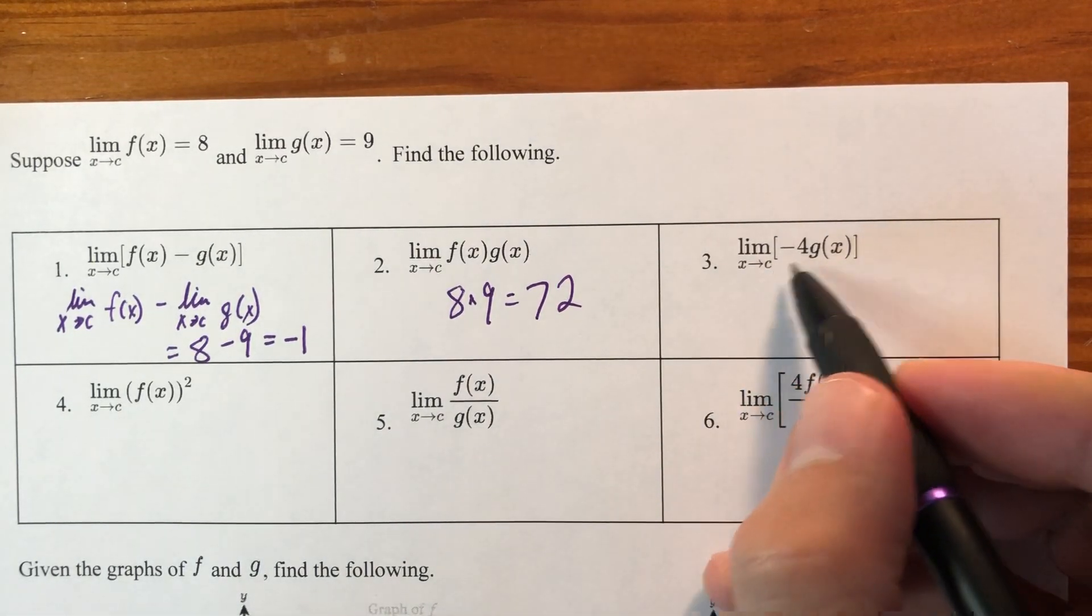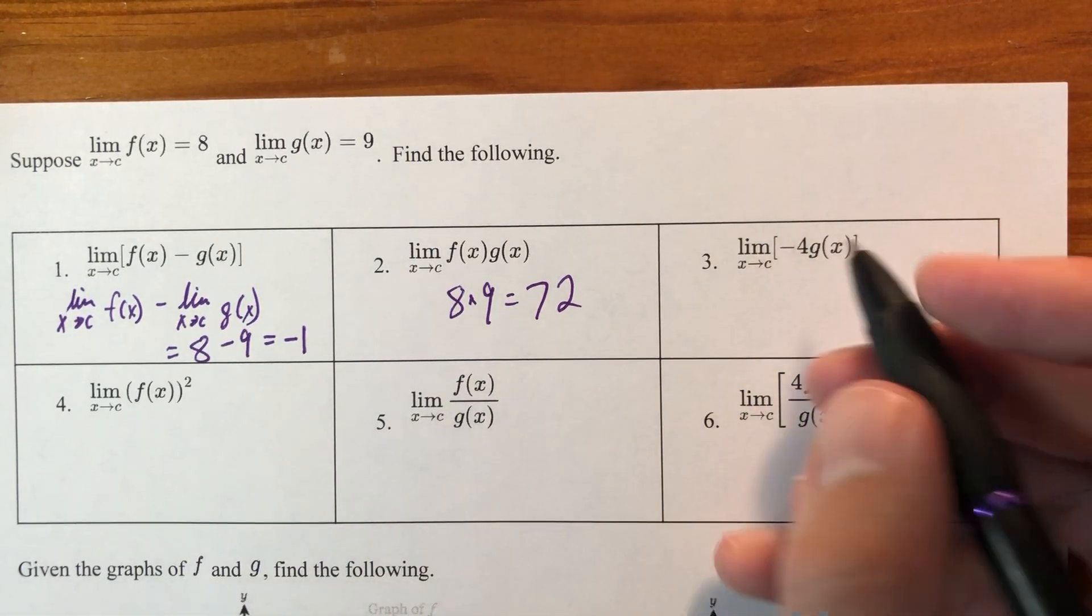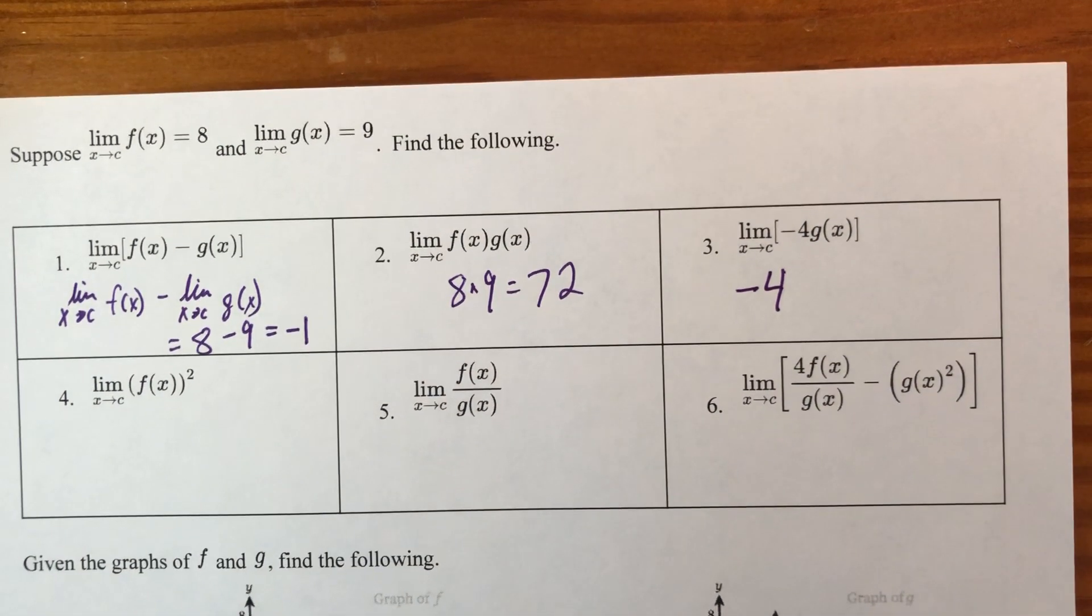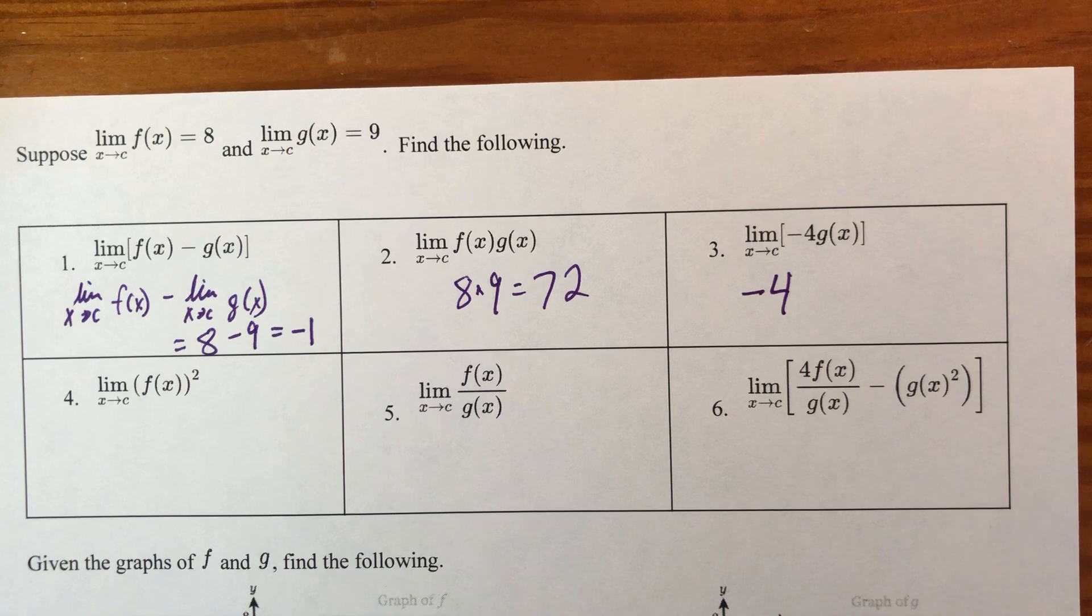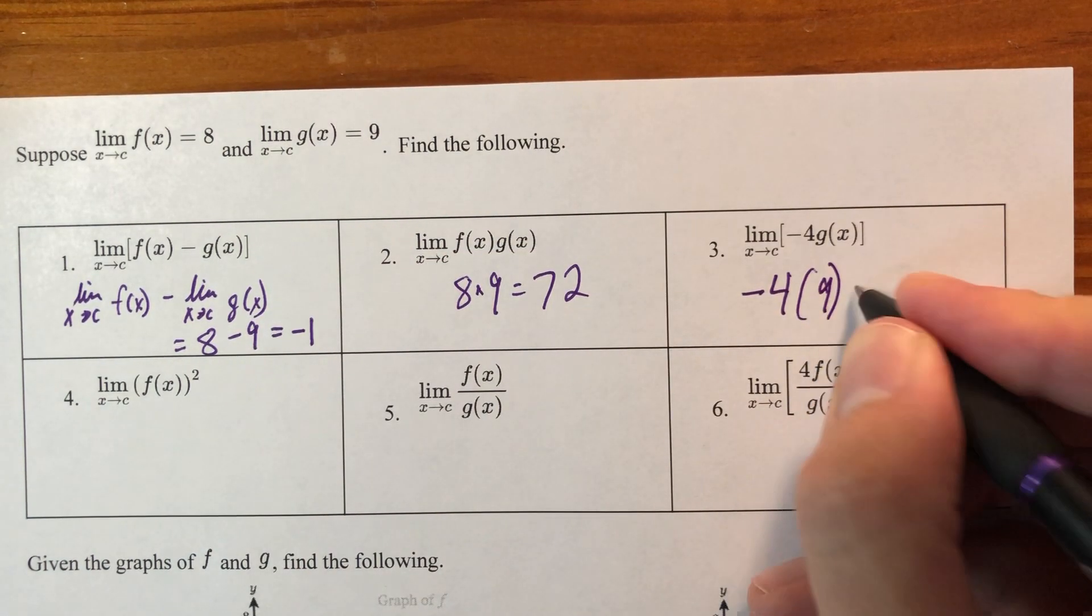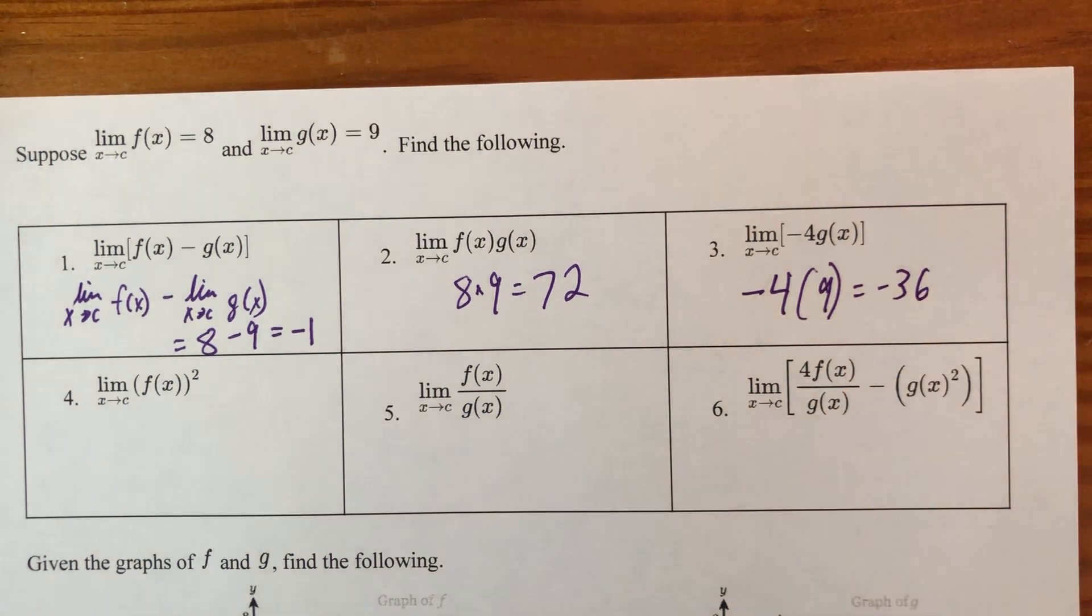Okay, the limit as x approaches c of negative 4 g of x. Okay, fantastic. What's that negative 4 doing there? It's a scalar. It's just a multiple. You can put it in the very front and write a middle step. I choose not to. If the negative 4 wasn't there, the answer would be 9, but it is there, so we multiply by negative 4 and we get negative 36.